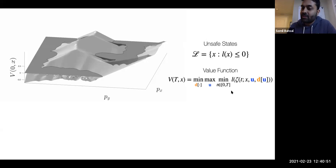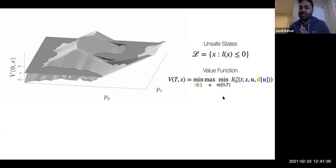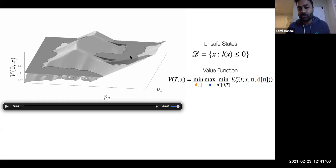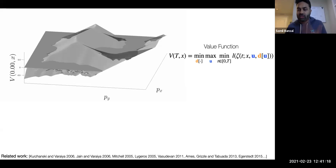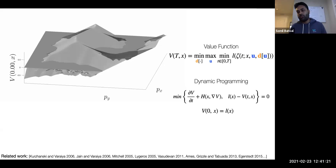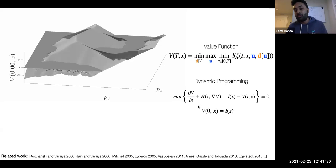We set up a zero-sum differential game between the control and the disturbance. The disturbance tries its best to push the system trajectory inside the obstacle over time, whereas the control tries to avoid it. We let disturbance and control fight it out to figure out from which states the disturbance would win and from which states control would win. The solution to this game is obtained using the principle of dynamic programming, resulting in this Hamilton-Jacobi-Isaacs variational inequality, starting from our terminal value function L(x) representing our target set.